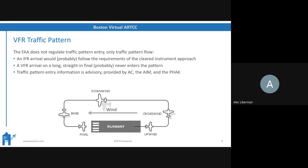There are no official regulations regarding traffic pattern entries, only the flow. An IFR arrival would almost definitely follow a cleared instrument approach on a long straight-in final, so a VFR arrival would usually never fly a long straight-in final because that would put them in direct conflict with IFR aircraft. Traffic pattern entry information is not technically regulatory but very strongly recommended, and it's provided by advisory circulars, the Aeronautical Information Manual, and the Pilot's Handbook of Aeronautical Knowledge, also known as the PHAK.